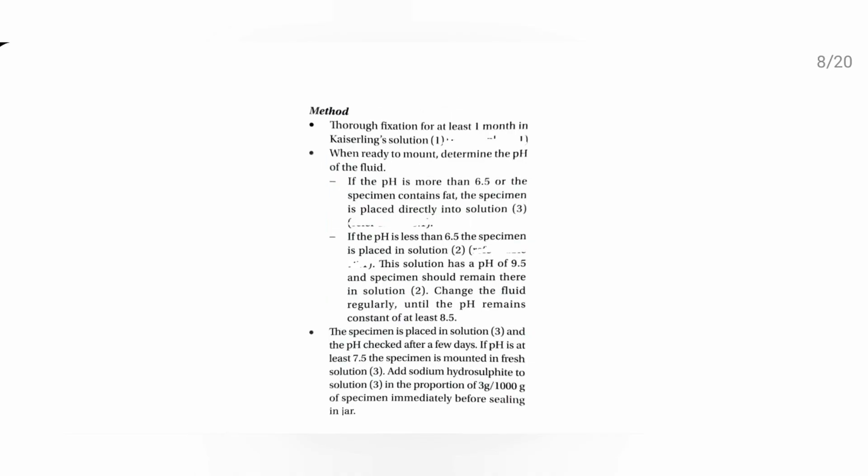After proper fixation for at least one month in Kaiserling solution, when the specimen is ready to mount, determine the pH. If the pH is more than 6.5, or if the fat content is high, place the specimen in Solution 3. If the pH is less than 6.5, place the specimen in Solution 2. If the solution has a pH of 9.5, continue in Solution 2.